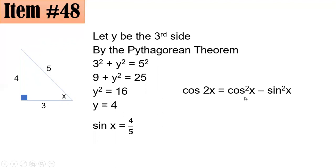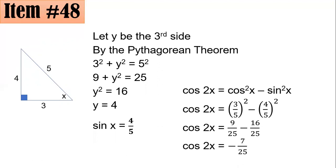By substitution, we have cosine 2x equals the square of 3/5, because that's your cosine x earlier, minus the square of sine x, which is 4/5. This simplifies to 9/25 - 16/25, and cosine 2x is -7/25, and that's letter C. I hope it's clear.